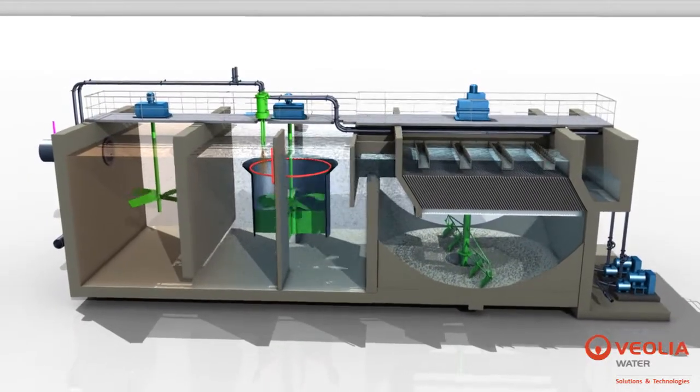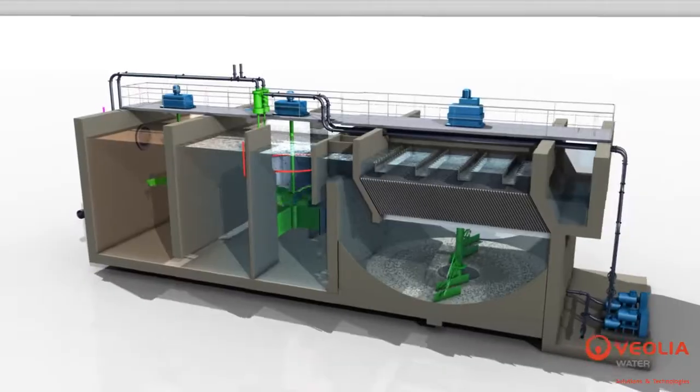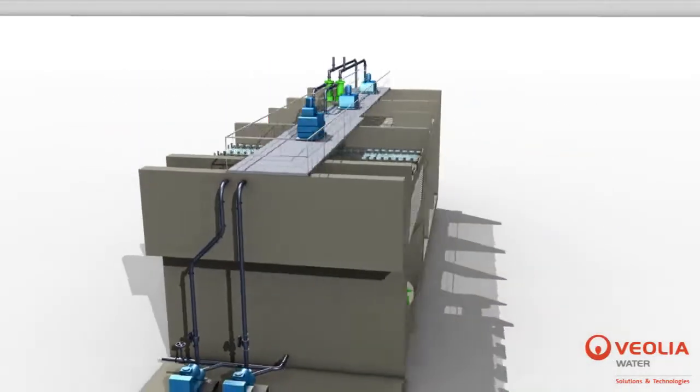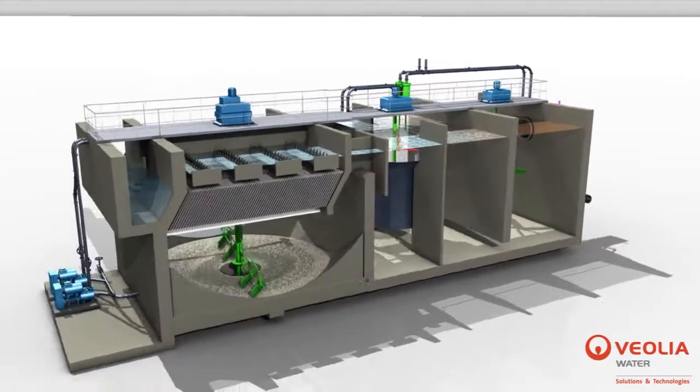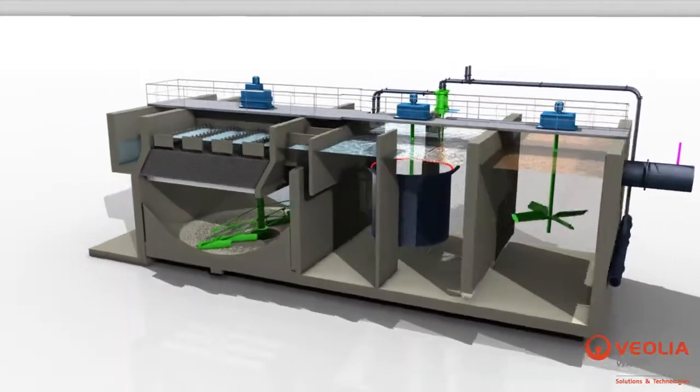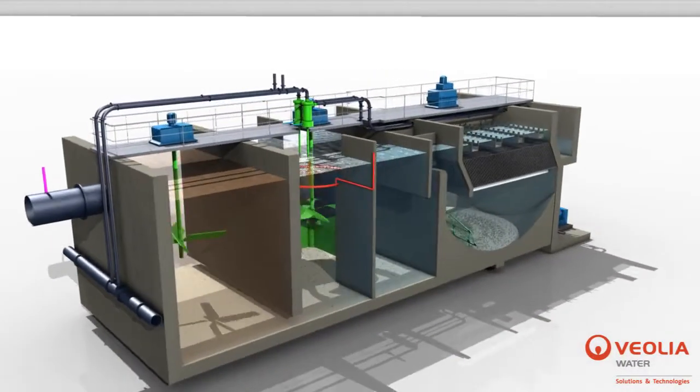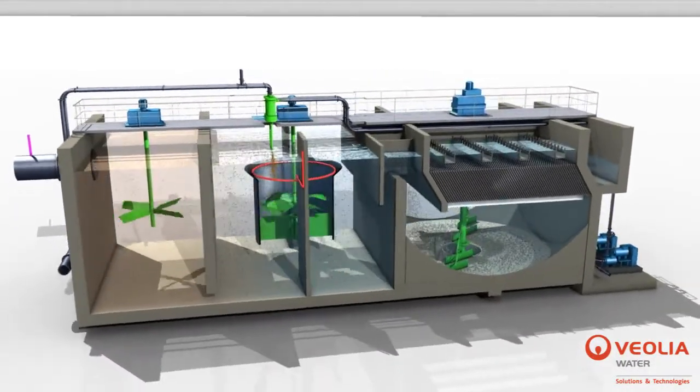Thanks to turbomix, power consumption and therefore operating costs are reduced. Depending on raw water quality and treatment objectives, the rise rates in ActiFlow Turbo range between 80 and 150 meters per hour and can be as high as 200 meters per hour in some specific applications.